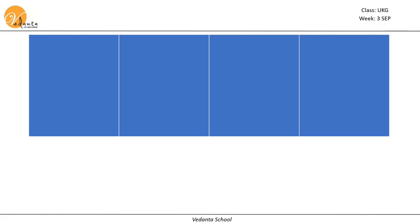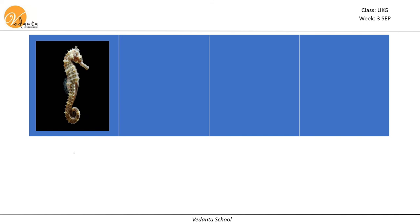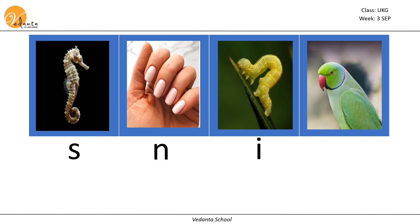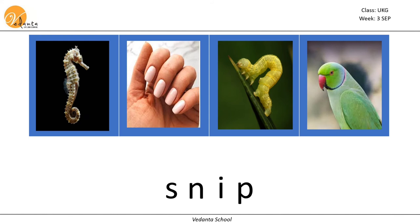With these blends, let us make a word. The first picture is seahorse — starts with s sound. Nail starts with n sound. Inchworm starts with i sound. And parrot starts with p sound. Now let's blend: sn, i, sni, p — snip. Snip.